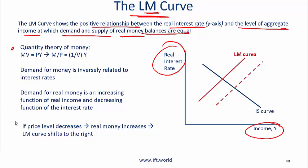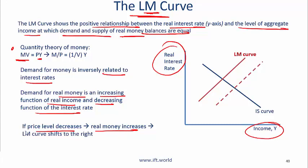Key points used to derive the LM curve: The quantity theory of money — MV (money supply times velocity) equals P times Y (price level times output). The demand for money is inversely related to interest rates: if interest rates are high, your demand for money is low. Demand for real money is an increasing function of real income and a decreasing function of interest rates. If the price level increases, real money balances increase, causing the LM curve to shift right.